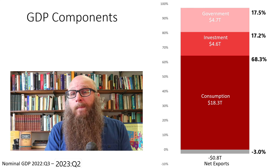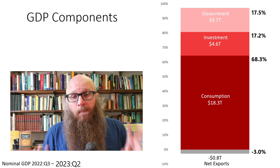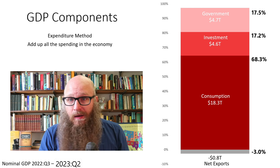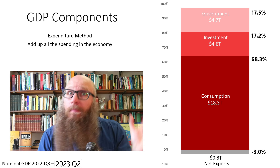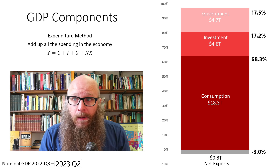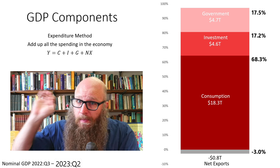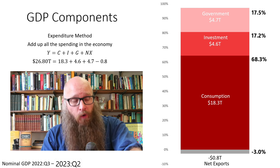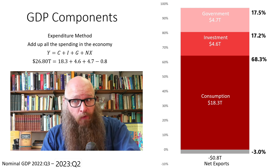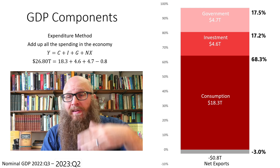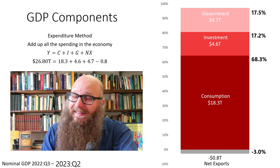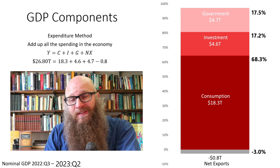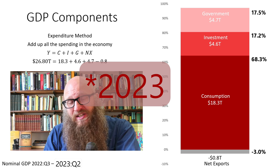This means we import slightly more than we export. This is the expenditure method — we add up all the spending in the economy. The formula to memorize: C plus I plus G plus NX. That's $18 trillion plus $4.6 trillion plus $4.7 trillion minus $0.8 trillion, equal to $26.8 trillion, as of the second quarter of 2022.